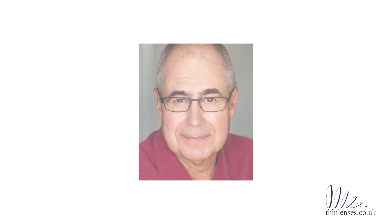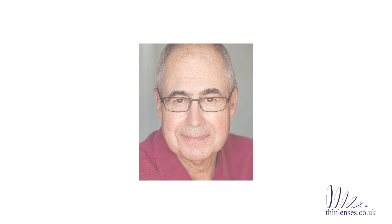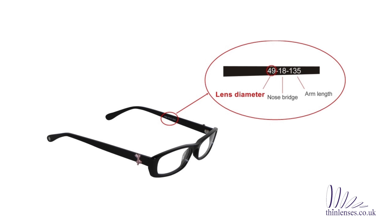Here at Thin Lenses we've developed an online tool which means you can get your measurements by following a few simple steps. Before you start you will need a passport style photo of yourself wearing your current glasses. You will also need to know the lens diameter of your current frame, which is normally found on the inside of one of the arms and is the first of a series of three numbers.